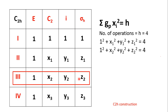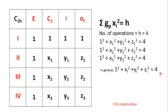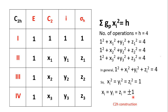Applying the same logic to the third irreducible representation, with character under E equal to 1, and C2: x2, I: y2, sigma H: z2, we get 1² + x2² + y2² + z2² = 4. In general, 1² + xi² + yi² + zi² = 4, meaning all terms equal 1. Therefore xi² = yi² = zi² = 1, so xi = yi = zi = ±1. Each character can take either the +1 or −1 value.